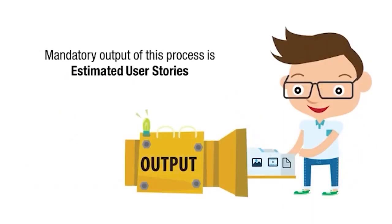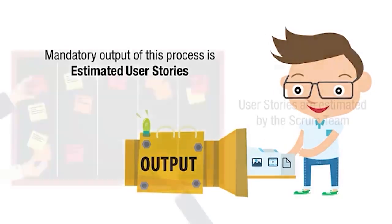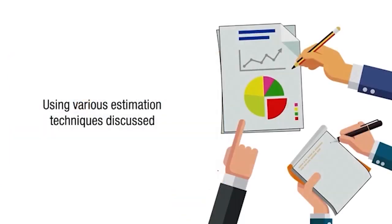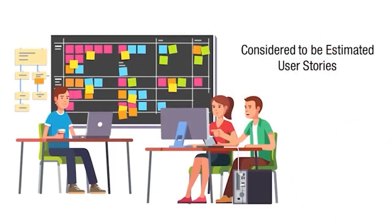The mandatory output of the Estimate User Stories process is estimated user stories. After the user stories are estimated by the Scrum Team using the various estimation techniques, they are considered to be estimated user stories.